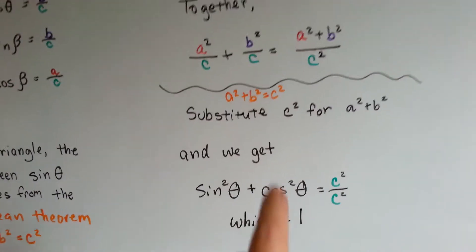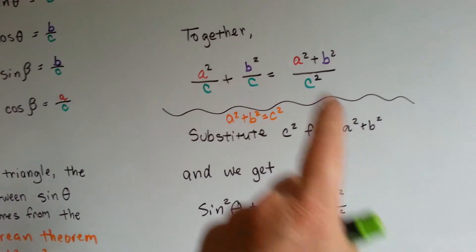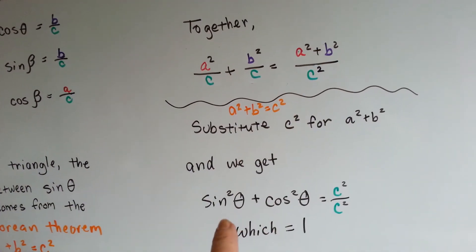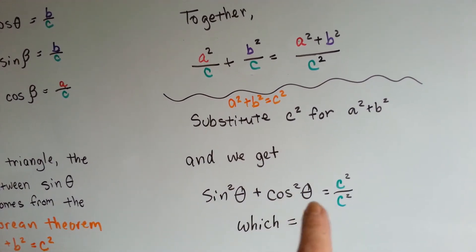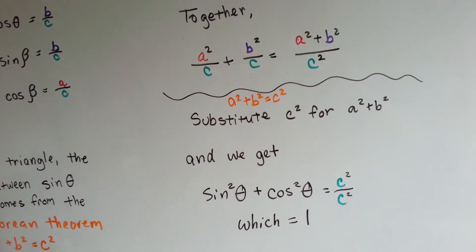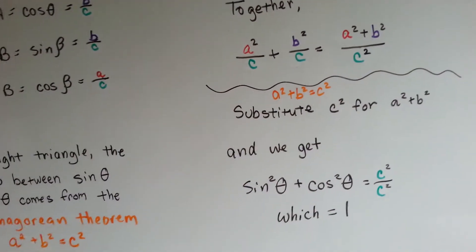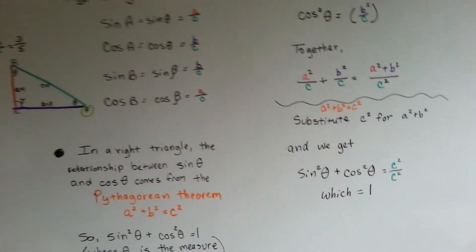So, when we substitute the C squared for that, we get sine squared theta and cosine squared theta is C squared over C squared, which is 1. I hope that wasn't too confusing, and I hope the colors helped.